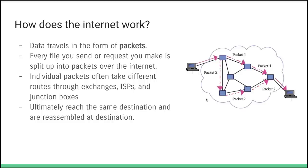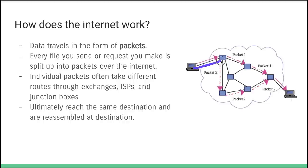The internet works by transmitting data in the form of packets. If you're sending a picture from Zimbabwe to the United States, that picture gets broken up into maybe 100 different packets and transmitted through the internet. Those packets may take different routes through different exchanges, routers, and ISPs until they reach the destination, where they're reassembled to show you that picture.